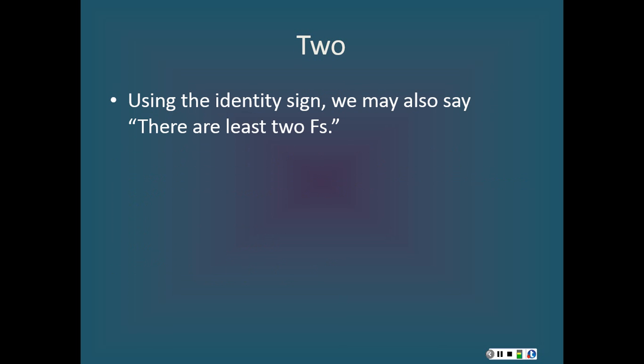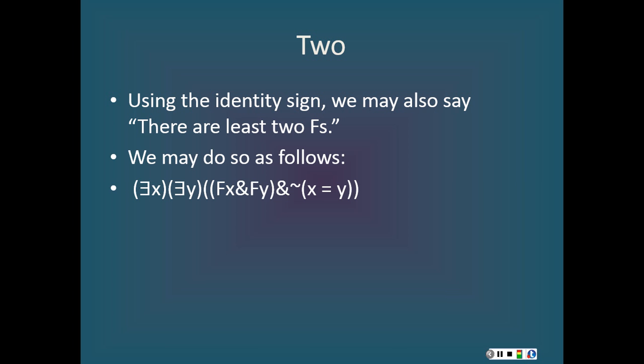We can also say, using the identity sign, that there are at least two F's. We can say that as follows: there exists an x and there exists a y such that x is F and y is F, and it's not the case that x is identical to y. This tells us there is something x that's F and something y that's F, and those things are distinct — they are not the same thing — so there are at least two things that are F.